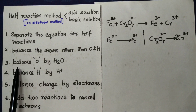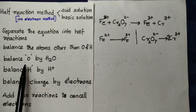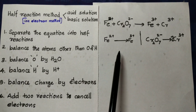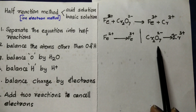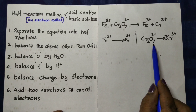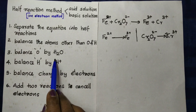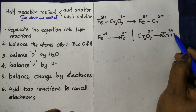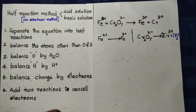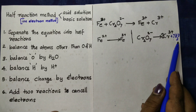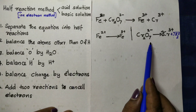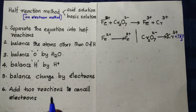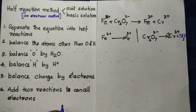Now we have the third step. We balance oxygen by adding H2O. Here we have Cr2O7, and we adjust by adding H2O to balance the oxygen atoms. There is no oxygen on the right side, so we add H2O on the opposite side.